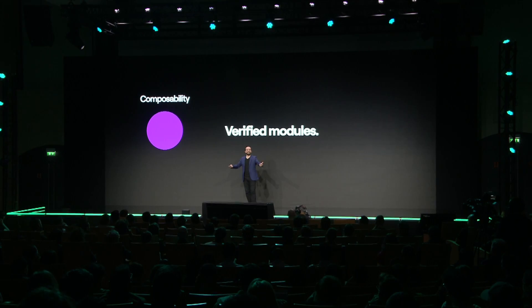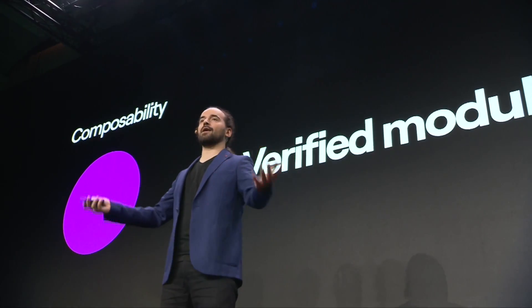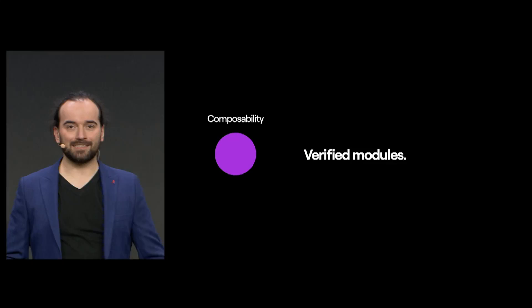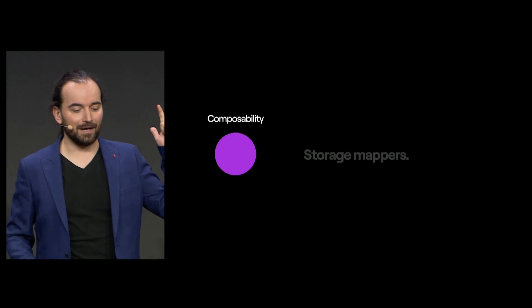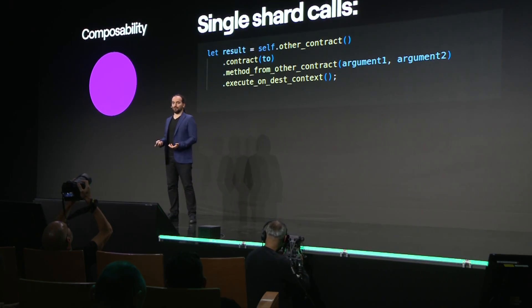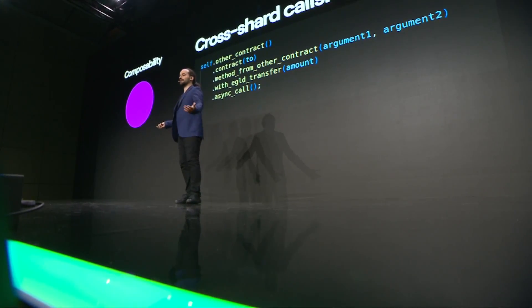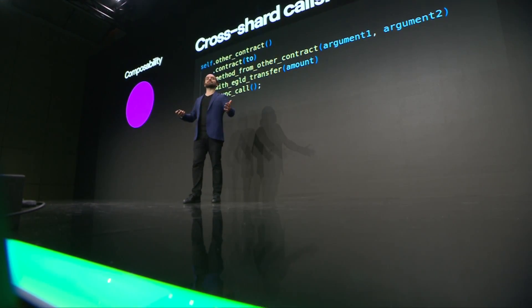This naturally leads me to talk about composability. Good language is about composability too — you want your builders to mix, merge, and match. These verified modules are the first example of that. We also have storage mappers, which are a very handy way to organize your storage and are very popular with our developers. Contracts do not live in a vacuum — they have to call one another all the time, and that process is technically quite complex. But we've built syntax so that developers can call contracts as if they were functions in the same program. We have sharding, and cross-shard calls are even more complex, but our syntax is very simple. We also add seamless integration with token transfers.